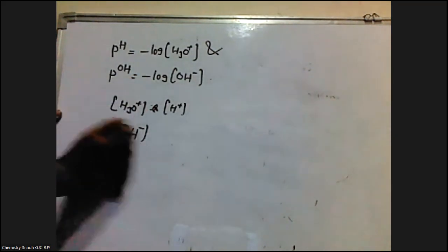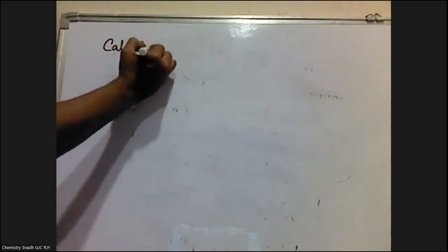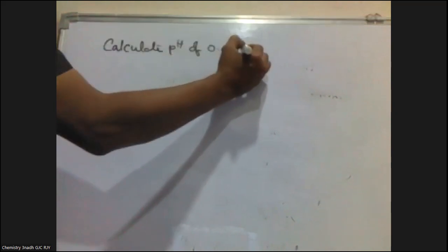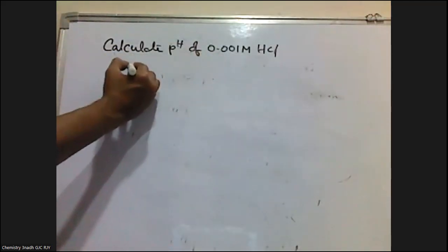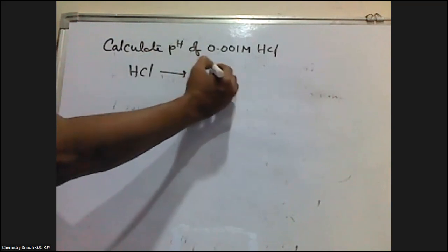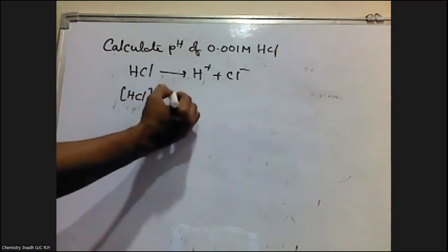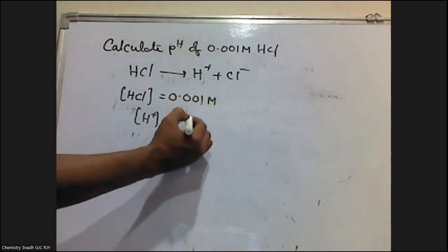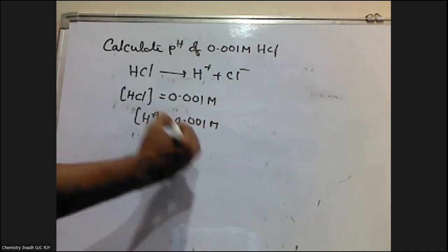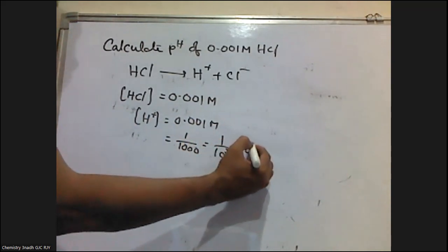For strong acids and strong bases, how to calculate the pH and pOH of the solution. Let me take an example. Calculate the pH of 0.001 molar HCl solution. We know that HCl is dissociating as H⁺ and Cl⁻. The concentration of HCl is equal to 0.001 molar, so the concentration of H⁺ is equal to 0.001. I am writing this 0.001 as 1 by 1000, which is 1 by 10³, and that is 10 to the power of minus 3.